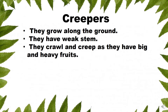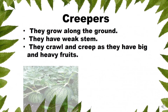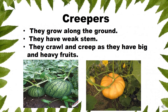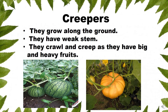Creepers — they grow along the ground. They have a weak stem and crawl and creep as they have big and heavy fruits. For example, watermelon plant and pumpkin plant.